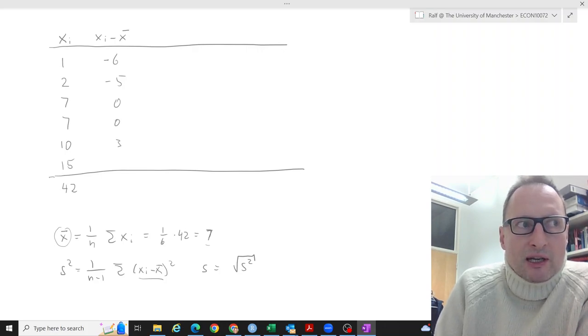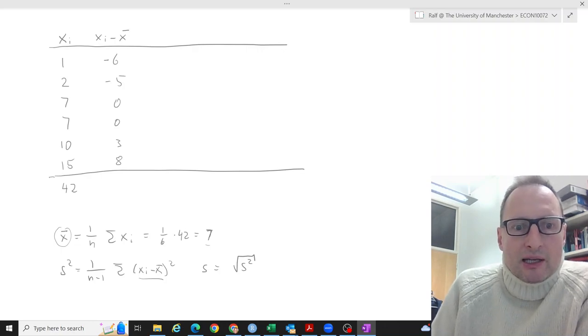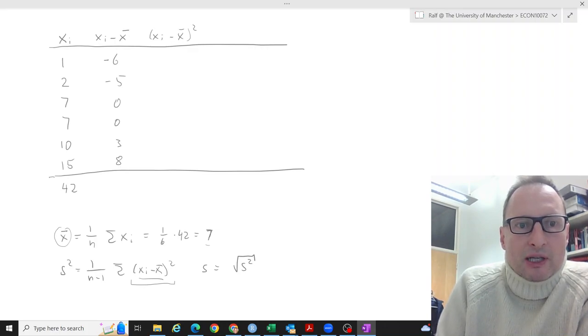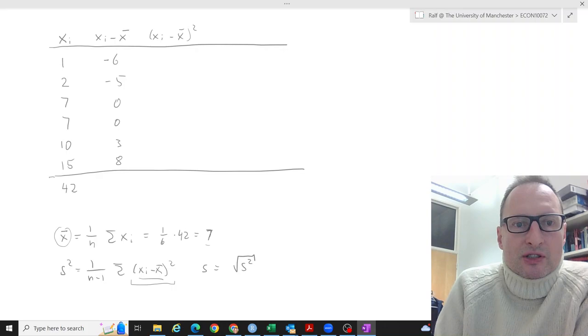10 minus 7 is 3, and 15 minus 7 is 8. Then what we really need here is these terms but squared. So let's calculate another column: xi minus x-bar squared. Negative 6 squared is 36. Negative 5 squared is 25. Zero squared is 0. This is 0. 3 squared is 9, and 8 squared is 64.